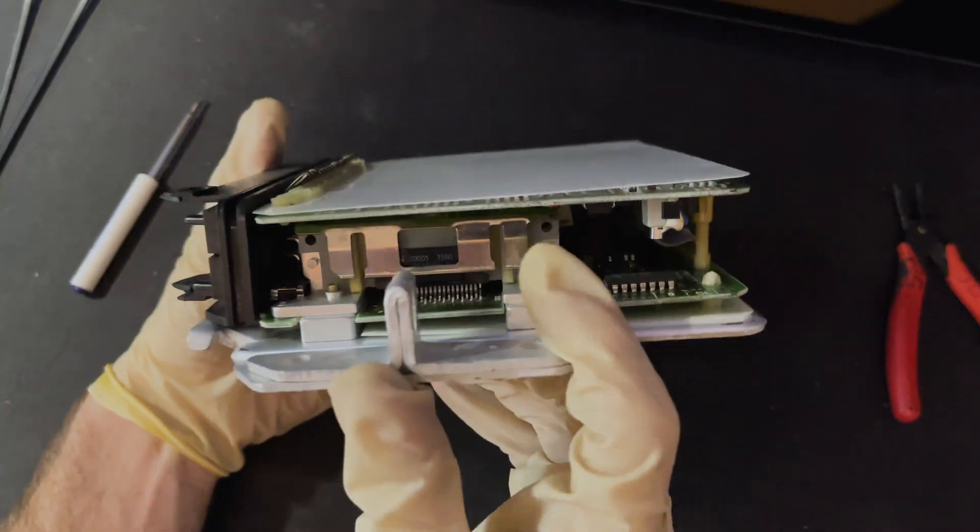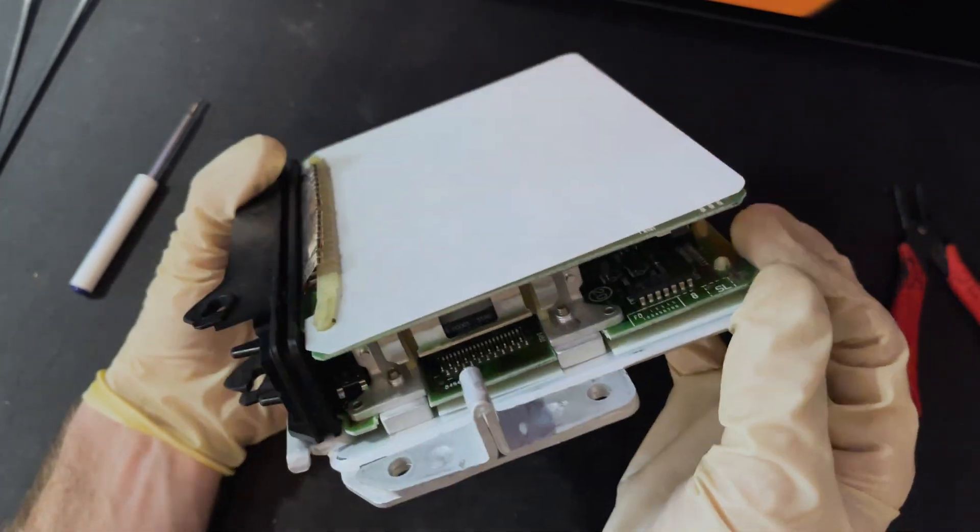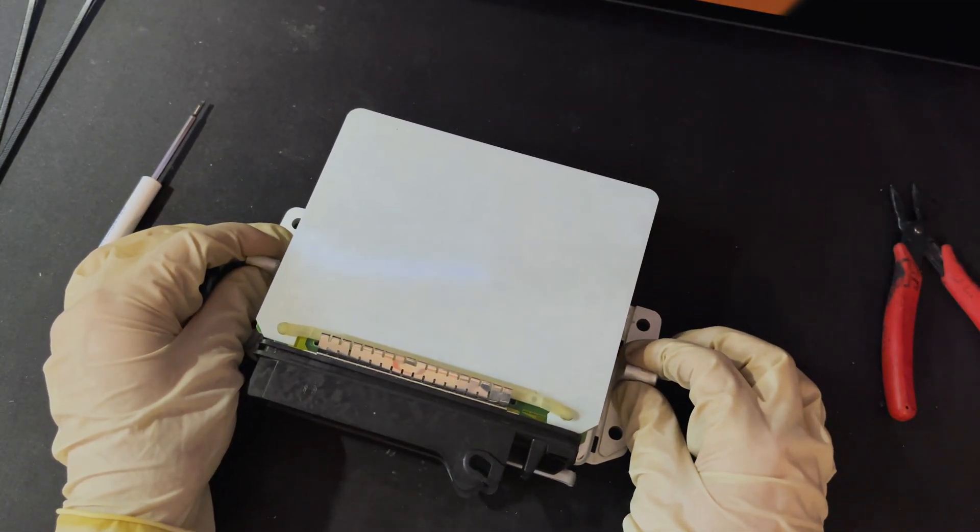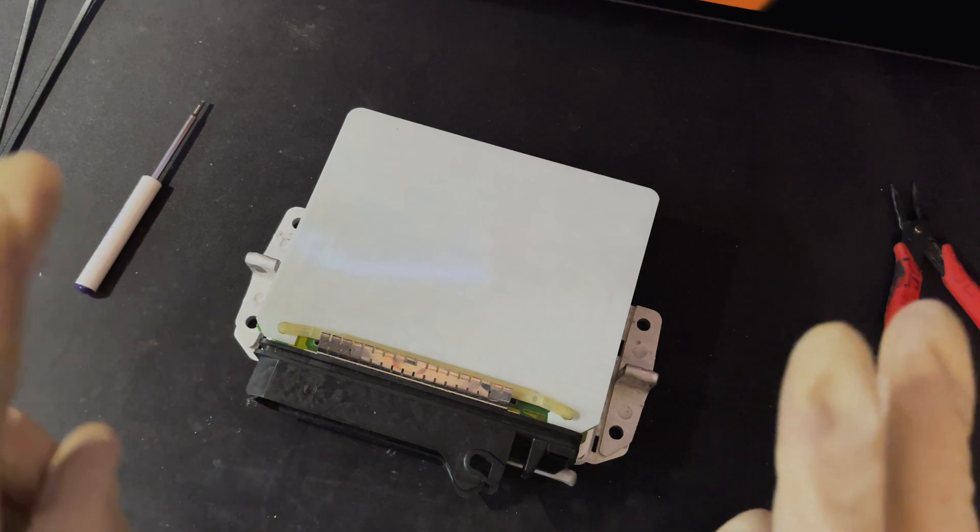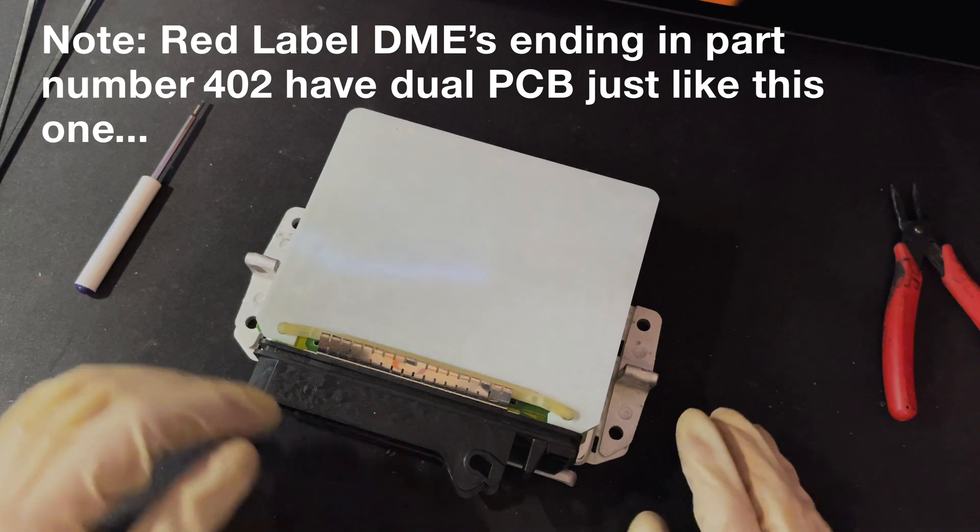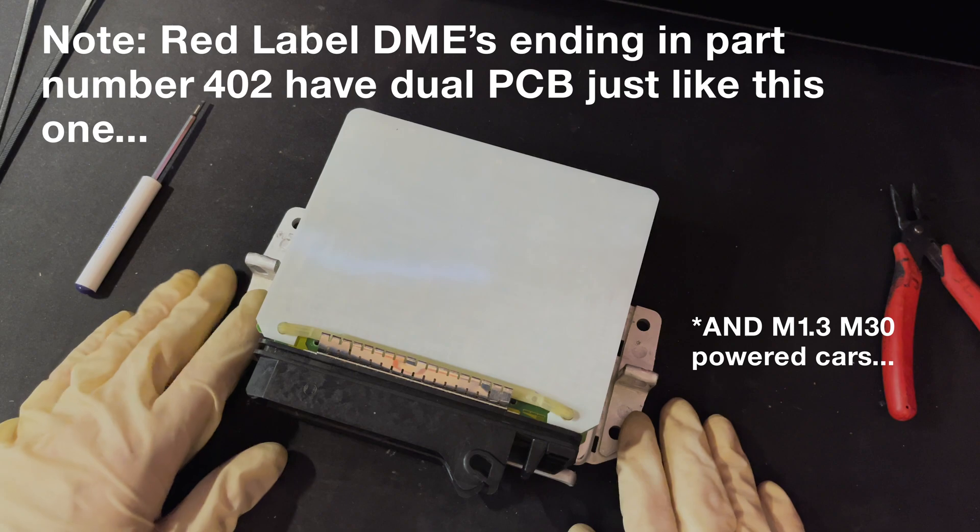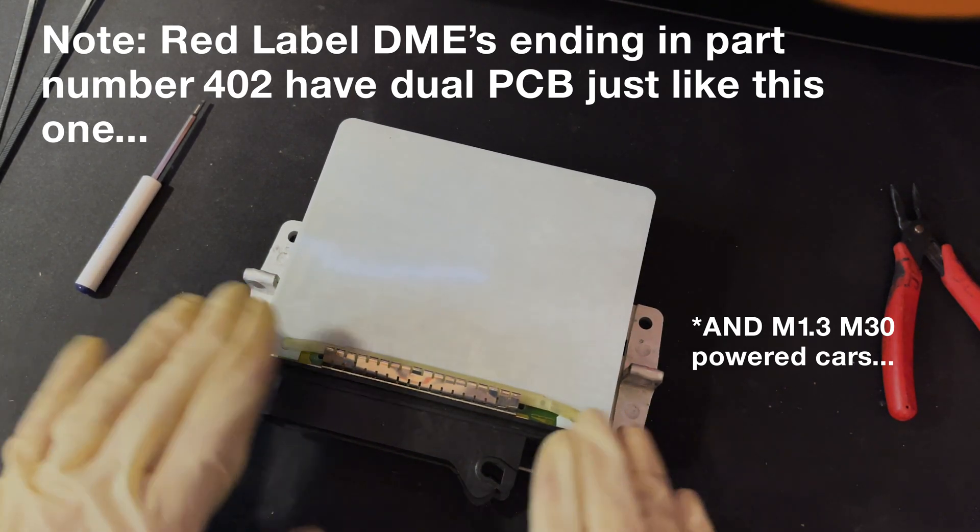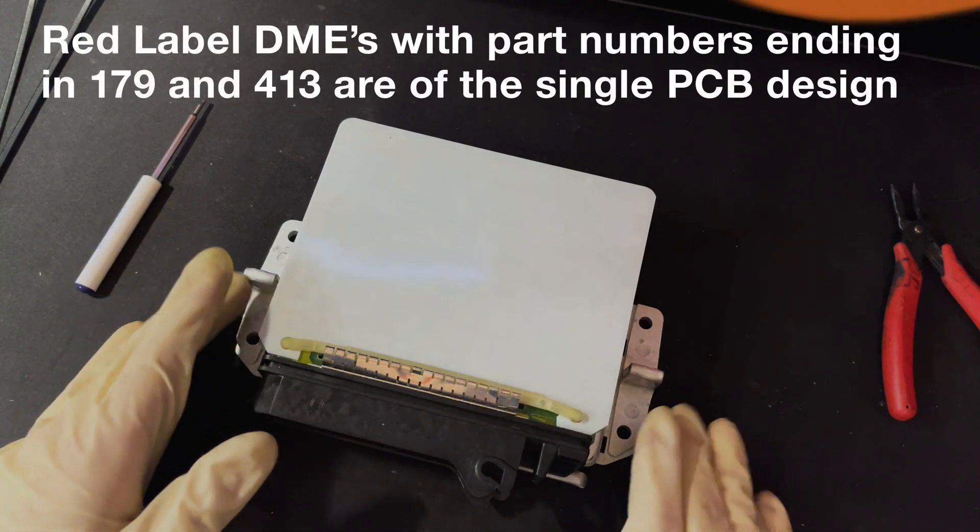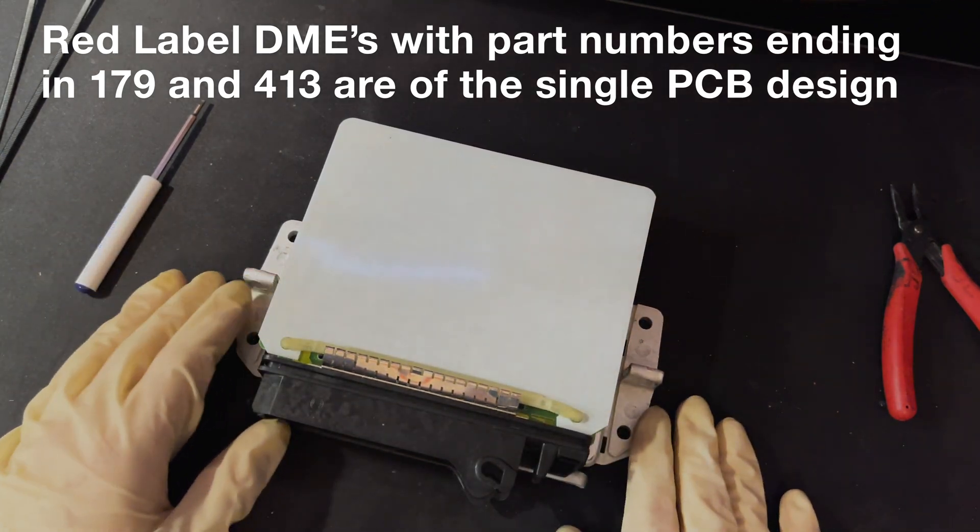So one thing you'll notice about these ones is they are sort of like a sandwich plate. So there's a bit of a procedure to get into these. If you have a, you know, what's called a red label DME, like one that belongs to a M50 powered car, that's going to be a lot simpler. It's the same steps that we've been through at this point. But the chip is accessible and there's nothing else you need to do. If you need to swap a chip, you can just put the cover back on easy peasy.